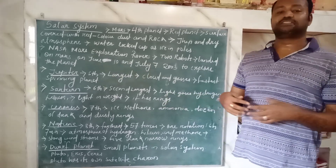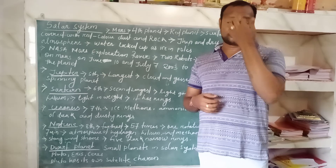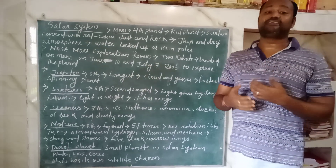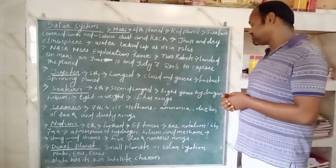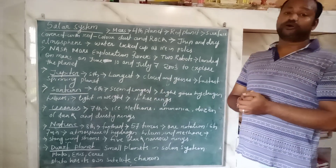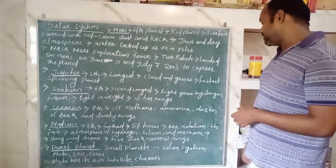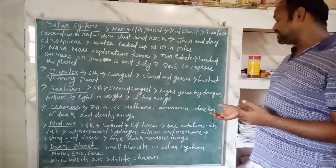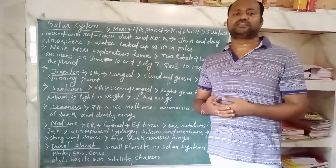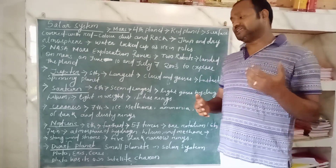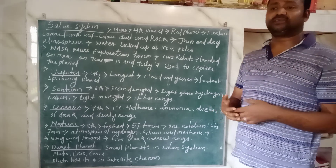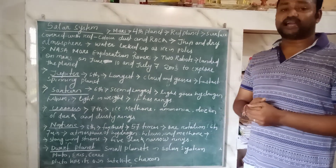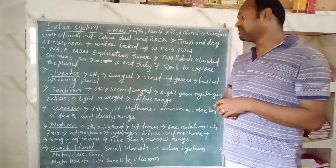Next is Neptune. Neptune is the eighth planet in the solar system, or the most farthest planet. It is about 57 times bigger than the Earth. The rotation time of Neptune is about 6 hours 7 minutes. The atmosphere of Neptune contains gases like hydrogen, helium, and methane. Most of the time there are many storms and cyclones occurring on Neptune. It has five dark, narrow rings.